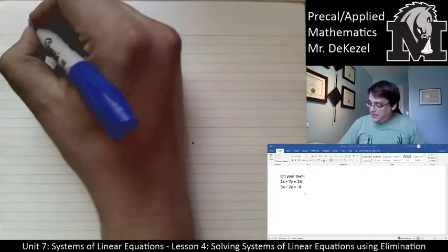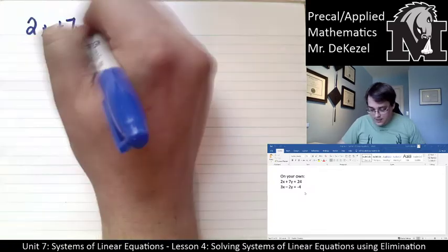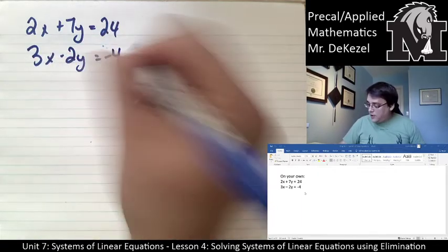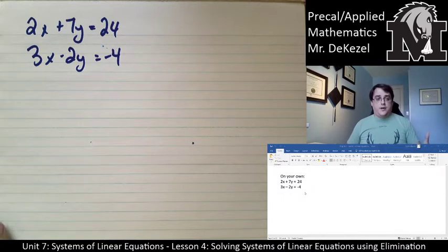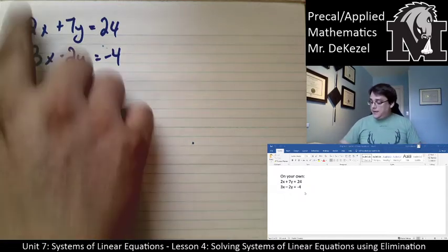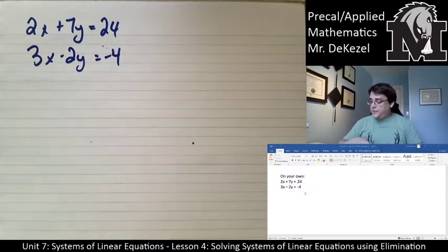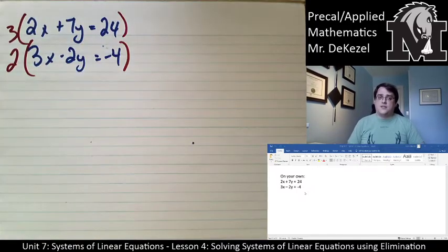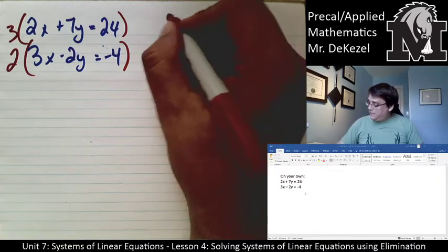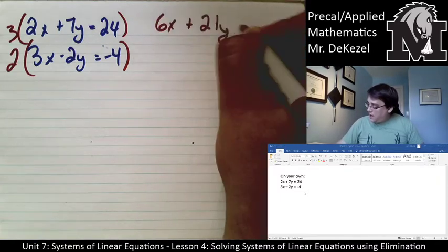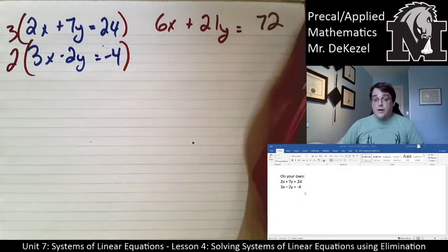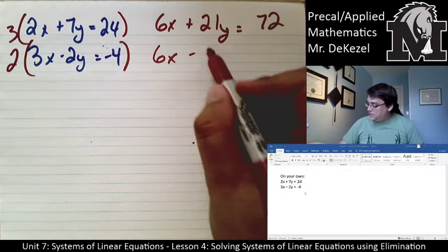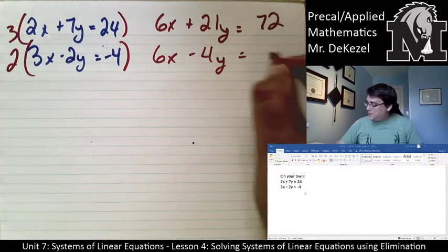We have 2x + 7y = 24 and 3x − 2y = −4. I'll multiply the top equation by 3 and the bottom by 2 to make the x's both equal 6, then subtract to eliminate. That gives 6x + 21y = 72 and 6x − 4y = −8.